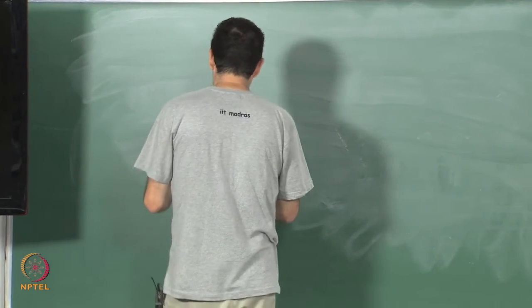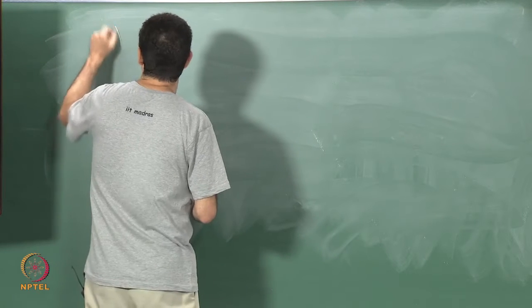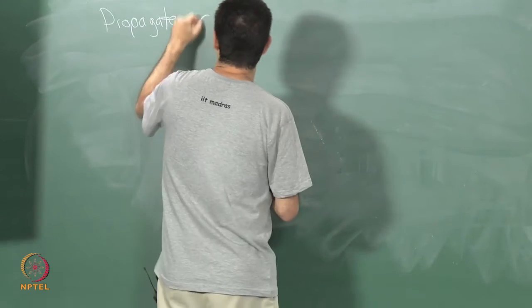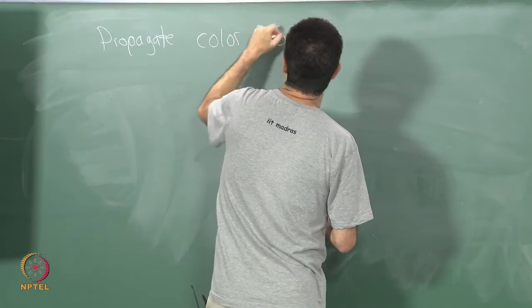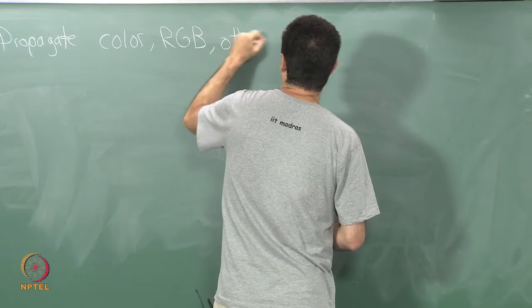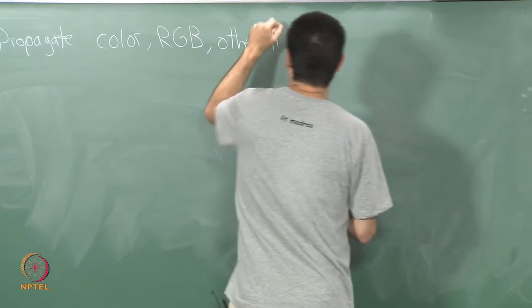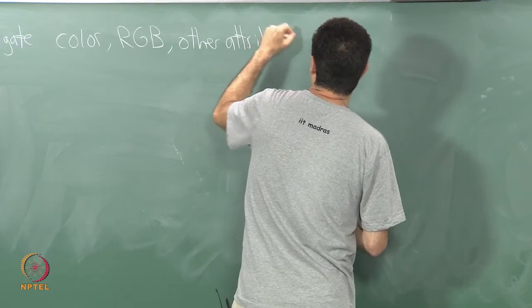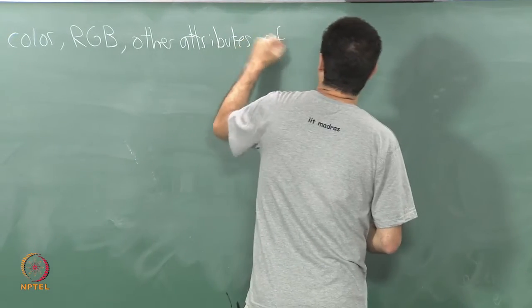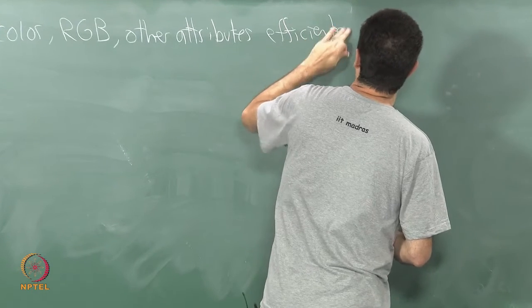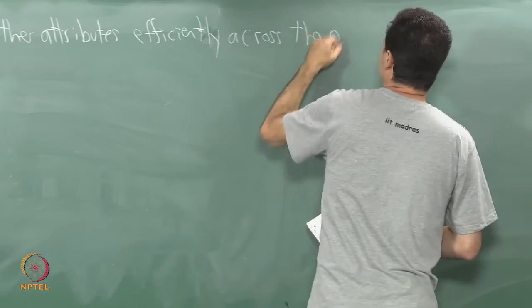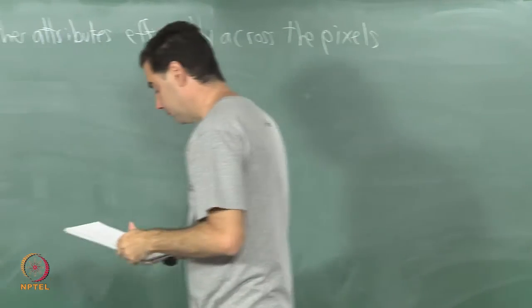The part that I have not talked about is how to propagate color or more particularly RGB values or other any other attributes, which may be surface normals or textures, I will give some examples of that, efficiently across the pixels.